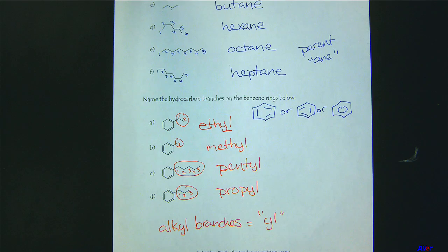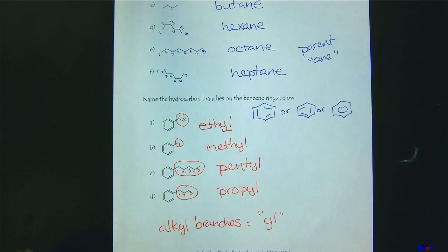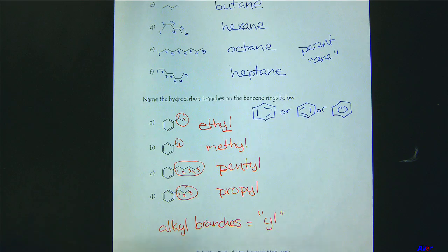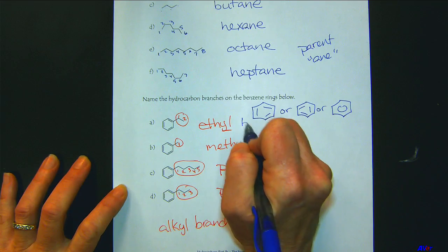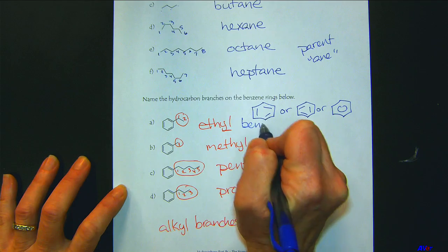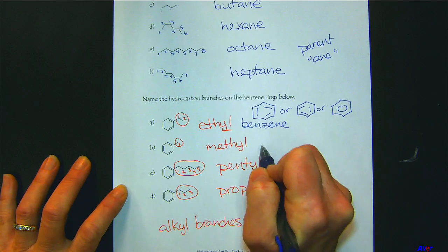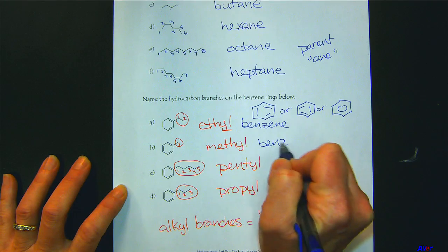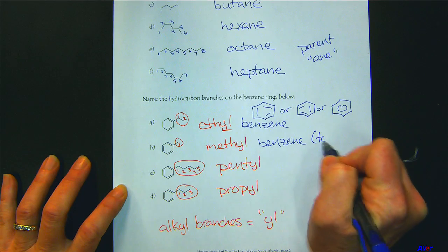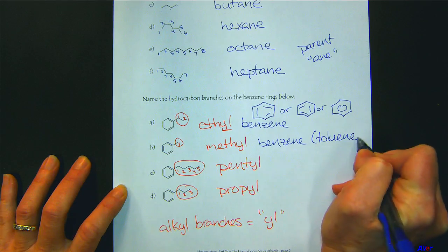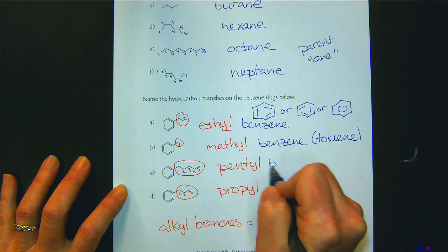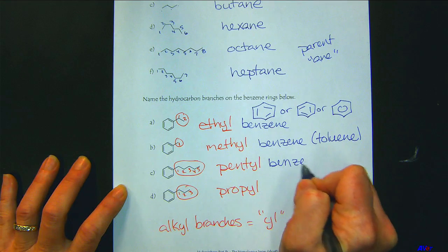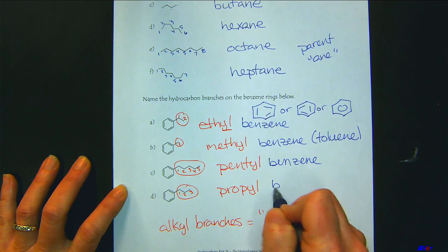We were just focusing on naming the branches, but it's very simple to give the entire compound name too. This would be ethylbenzene. Methylbenzene — though nobody calls it that, they call it toluene. And then pentylbenzene and propylbenzene.